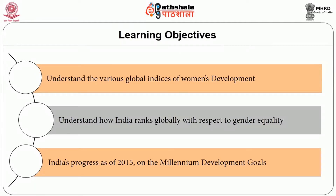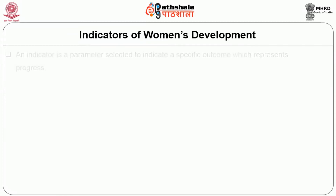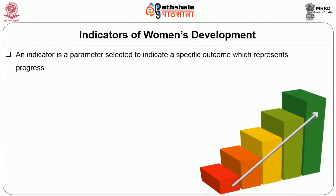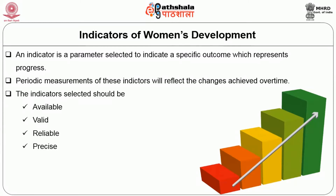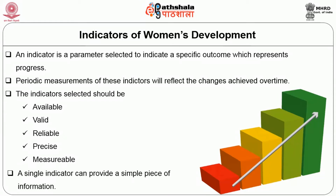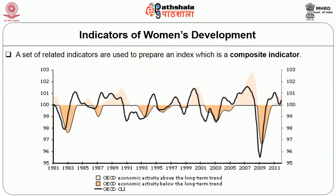We are learning this module so that we understand the various global indices of women's development, understand how India ranks globally with respect to gender equality, and India's progress as of 2015 on the Millennium Development Goals. An indicator is a parameter selected to indicate a specific outcome which represents progress. Periodic measurements of these indicators will reflect the changes achieved over time. The indicators selected should be available, valid, reliable, precise and measurable.